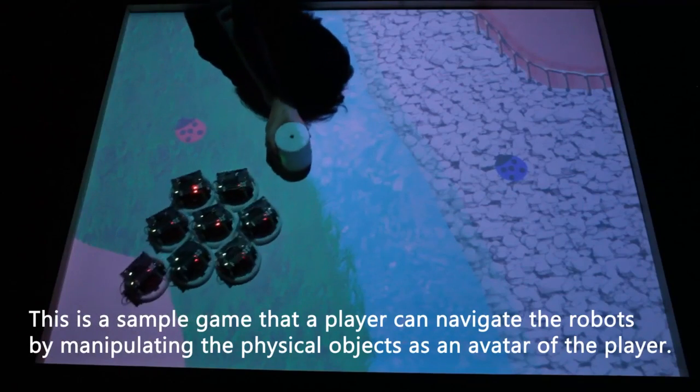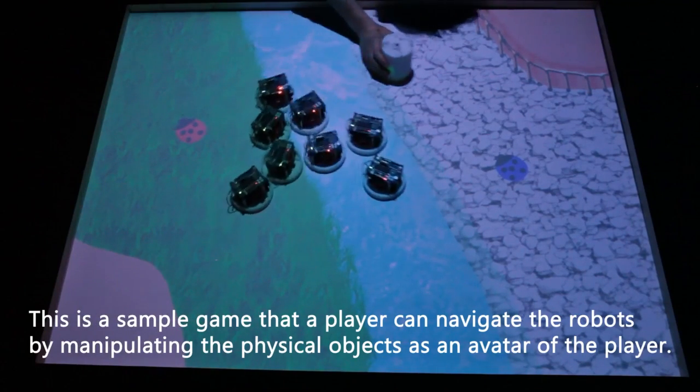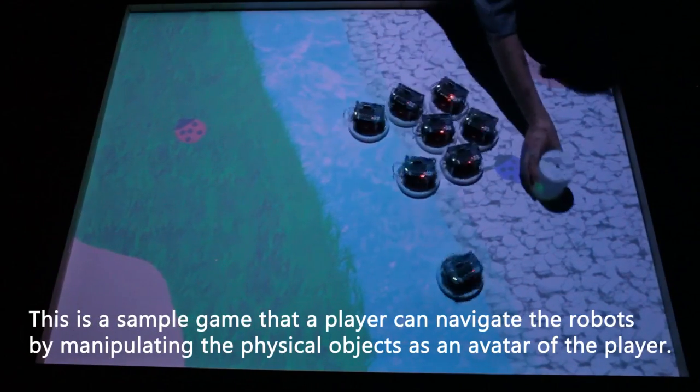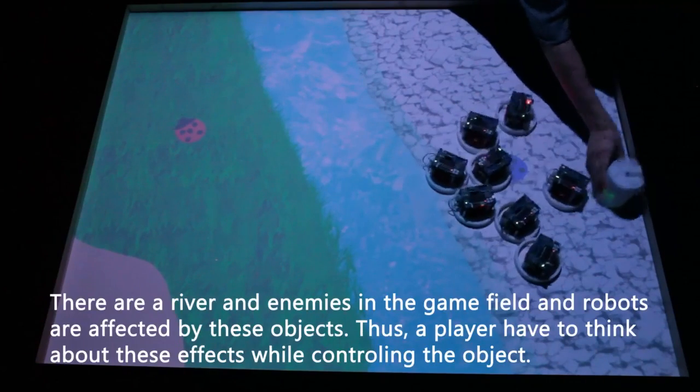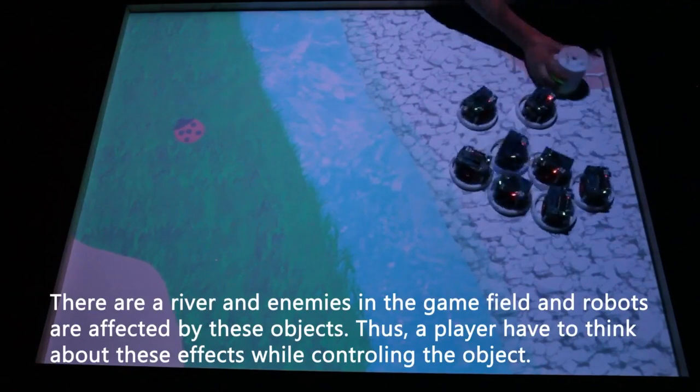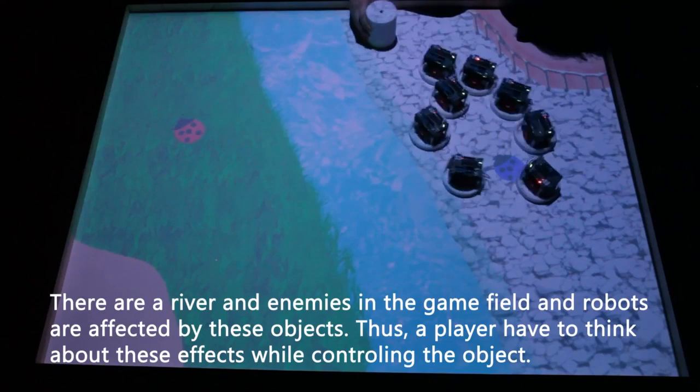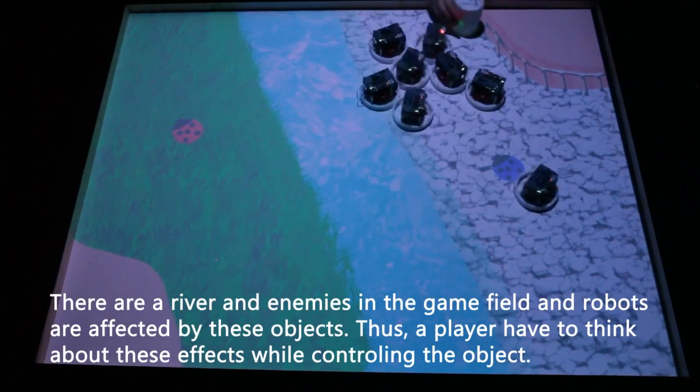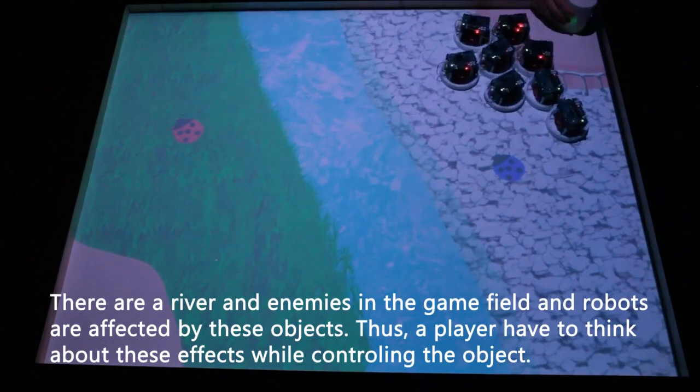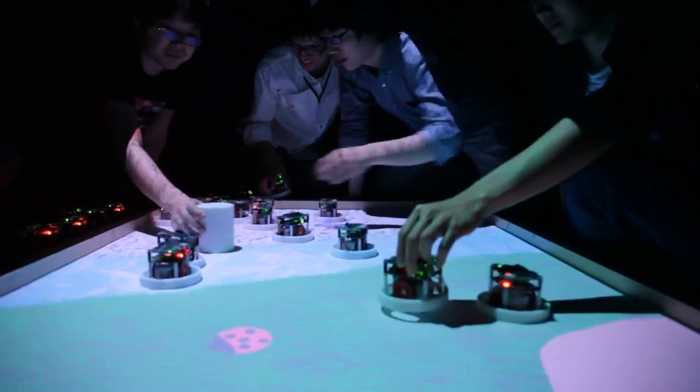This is a sample game that a player can navigate the robots by manipulating the physical object as an avatar of the player. There are a river and enemies in the game field, and robots are affected by these objects. Thus, a player has to think about these effects while controlling the object.